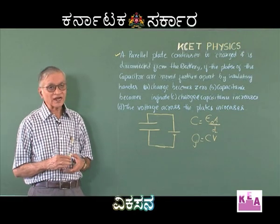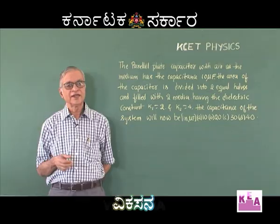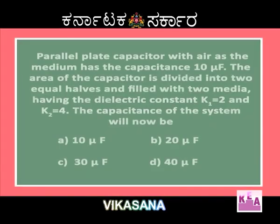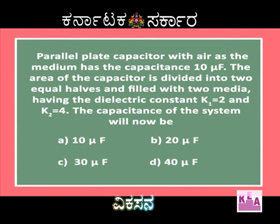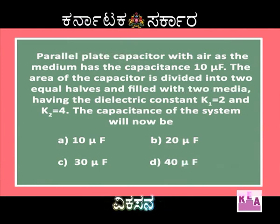Hence, the correct option to the original question is D. The next two questions are very important from the concept point of view — please note the concept carefully. The next question: a parallel plate capacitor with air as medium has capacitance 10 microfarad. The area of the capacitor is divided into two equal halves and filled with two media having dielectric constants k1 = 2 and k2 = 4.